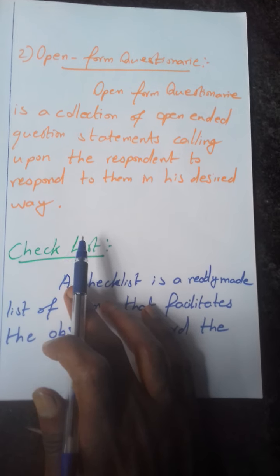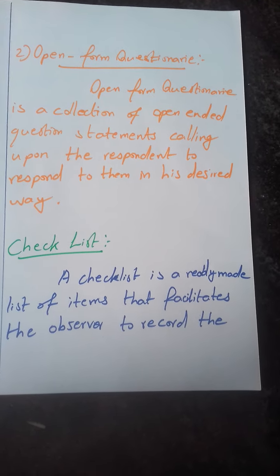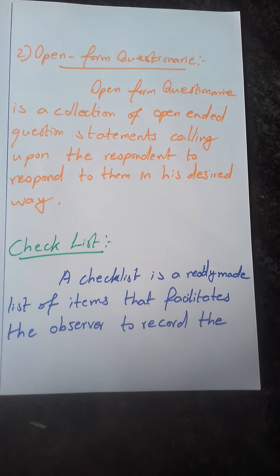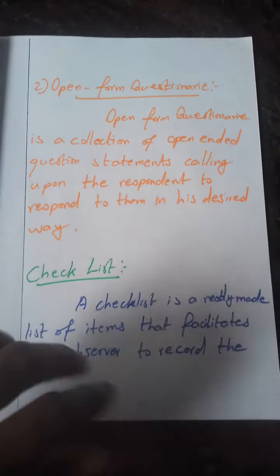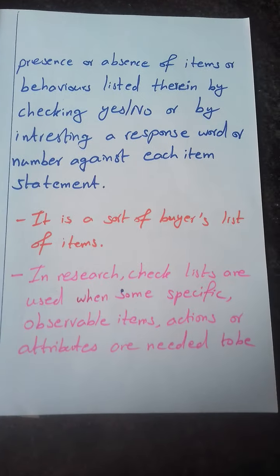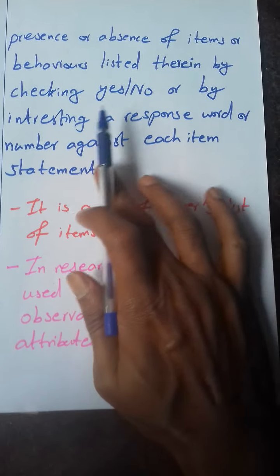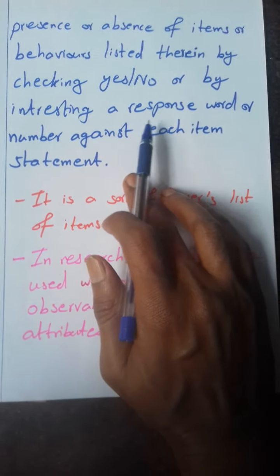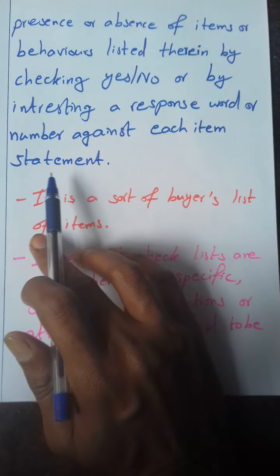The next is Checklist. A checklist is a ready-made list of items that facilitates the observer to record the presence or absence of items or behaviors listed therein by checking yes or no, or by entering a response word or number against each item statement.